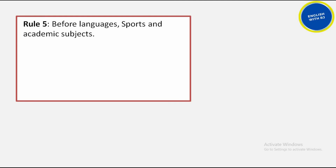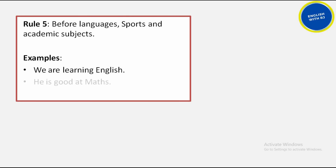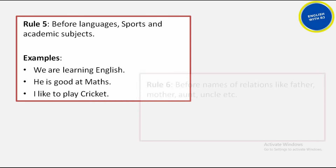Rule number 5: when talking about specific languages, subjects, or sports, no article is used. For example, 'We are learning English' — not 'the English' or 'an English.' 'He is good at maths' — not 'the maths.' 'I like to play cricket' — not 'a cricket' or 'the cricket.' Simply no article before languages, subjects, or sports.